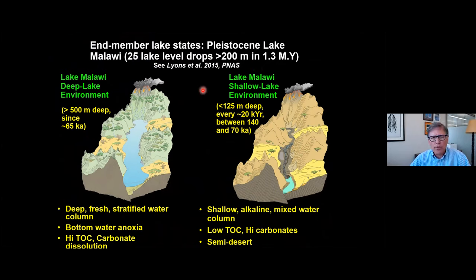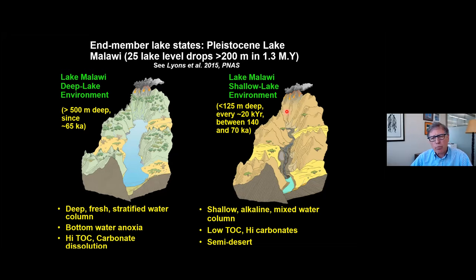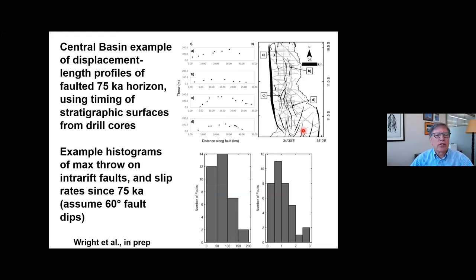Some of those lake level drops were more than 500 meters lower than modern. Lake Malawi today is 700 meters deep. Since about 65,000 years ago, we've had a relatively deep lake, stratified water column, bottom water anoxia, and bottom sediments enriched in organic matter. But over many intervals prior to 70,000 years ago, the lake was only 100 to 150 meters deep, probably modulated by orbital precession and a semi-arid landscape operative during that time.